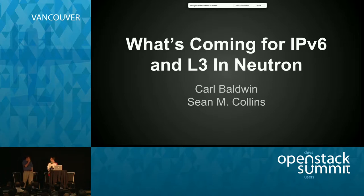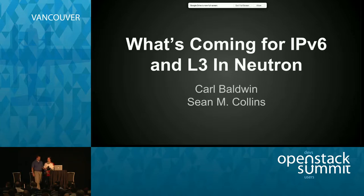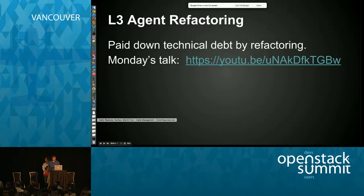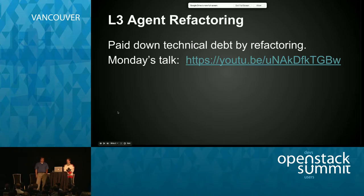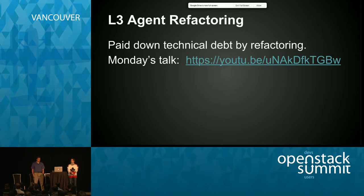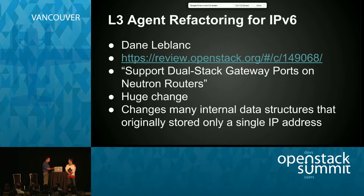I've been thinking about IPv6 over Kilo and what we're going to do for Liberty. We got together and started brainstorming, and this talk is about what we've come up with. Over the Kilo release I gave a talk here yesterday about the refactoring we've done in the L3 agent, and some of that supports IPv6 in Neutron. I'm going to turn it over to Sean to talk about the refactoring done specifically for IPv6.